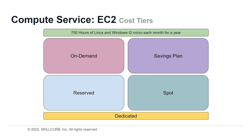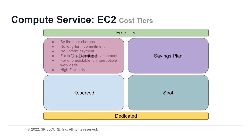The second pricing option is on-demand. With on-demand instances, you pay for compute capacity by the hour or by the second, depending on which instances you run. There's no long-term commitment and no upfront payments required. You can increase or decrease compute capacity depending on your application's demands, paying only the specified per-hourly rate. This is great for application testing and development, and for applications with short-term, spiky, or unpredictable workloads that cannot be interrupted.